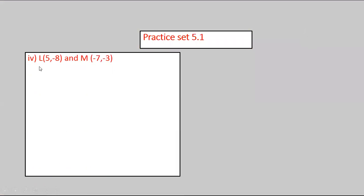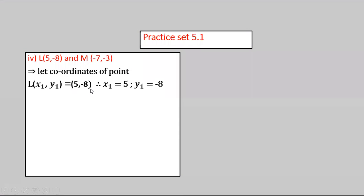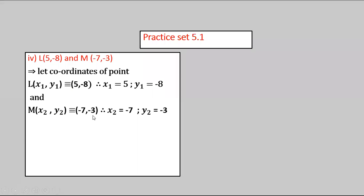To find the distance between point L and M: coordinate of point L is (5, −8) and coordinate of point M is (−7, −3). Let L be x1, y1, so x1 = 5, y1 = −8. Let M be x2, y2, so x2 = −7, y2 = −3. By using the distance formula, LM = √[(x2−x1)² + (y2−y1)²].